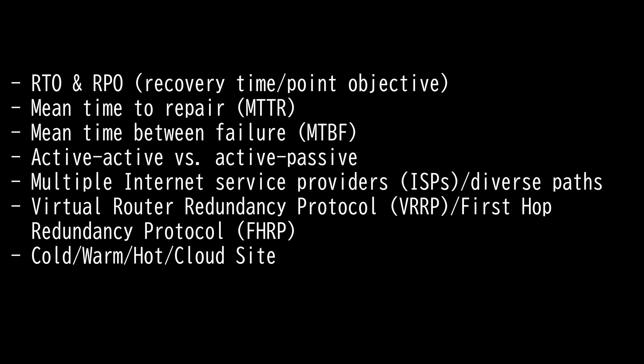First Hop Redundancy Protocol is used to prevent network failure at a default gateway. This is achieved by configuring multiple routers with the same IP address and MAC address, thus presenting the illusion of a single virtual router to the hosts in a LAN. The IP address of the virtual router is configured on all hosts in that network or subnet as a default gateway. It is a hub redundancy protocol designed to provide redundancy to the gateway router.